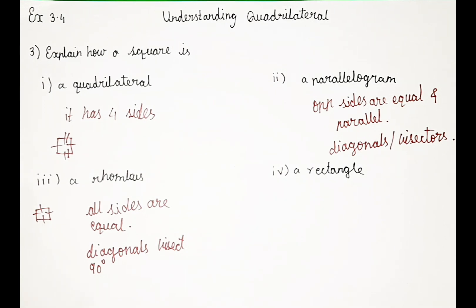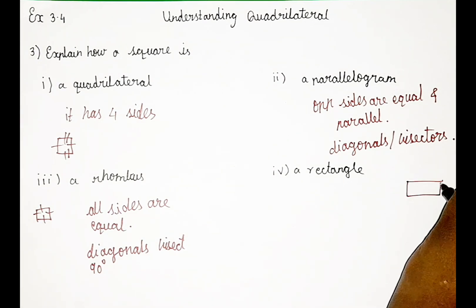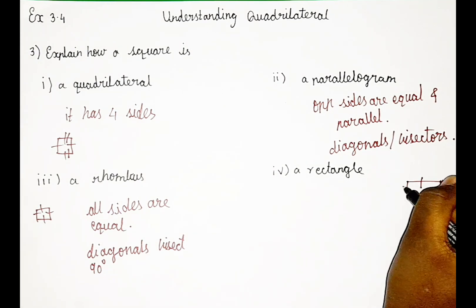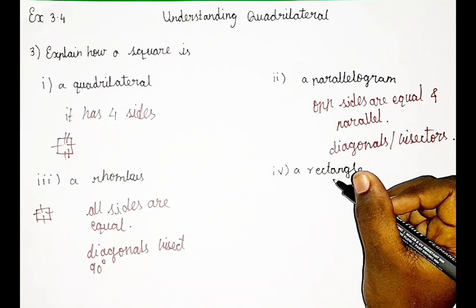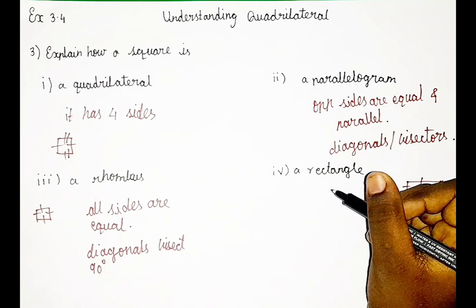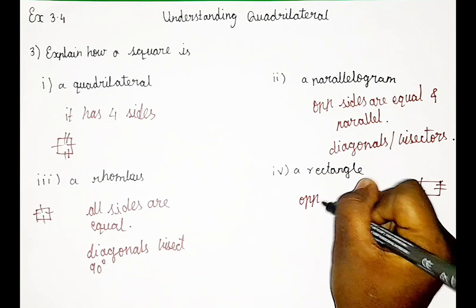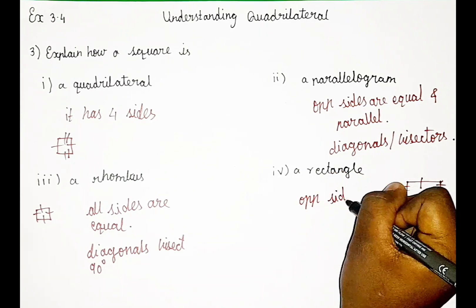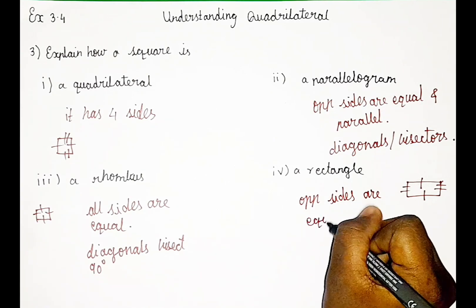So next, we have how a square is a rectangle. So in rectangle, you guys know that opposite sides are equal. In this, not all the sides are equal. Only opposite sides are equal. I told you guys, in square also opposite sides are equal. And all sides are also equal. So, opposite sides are equal.